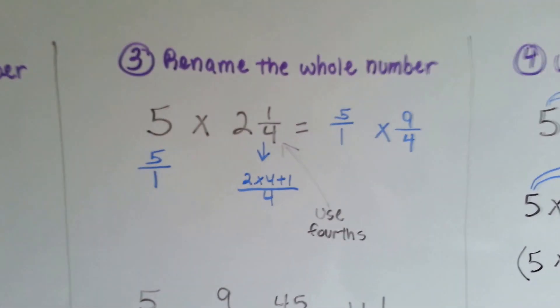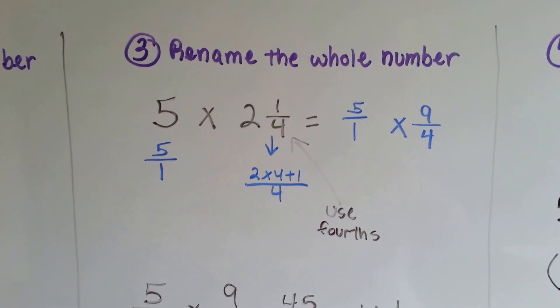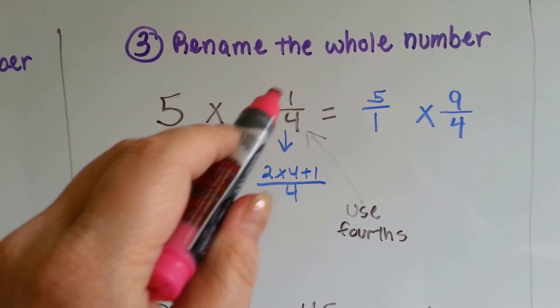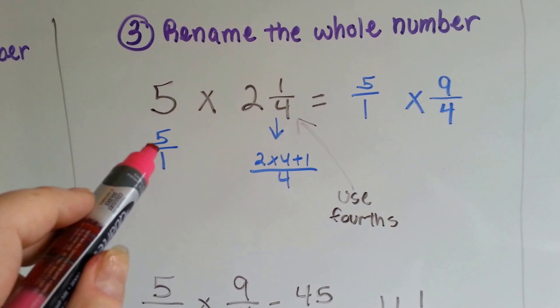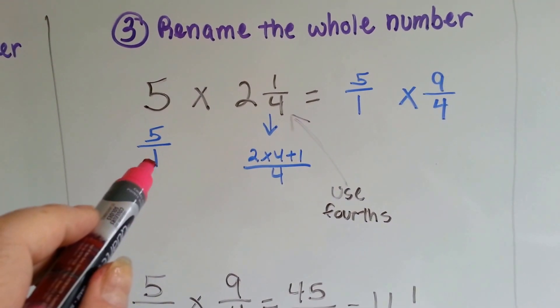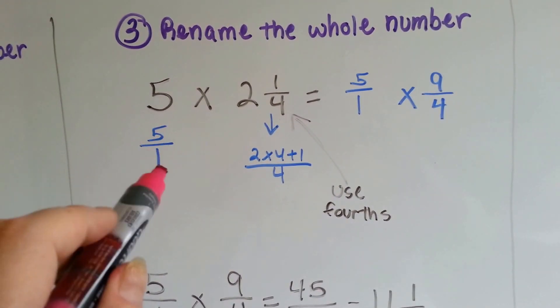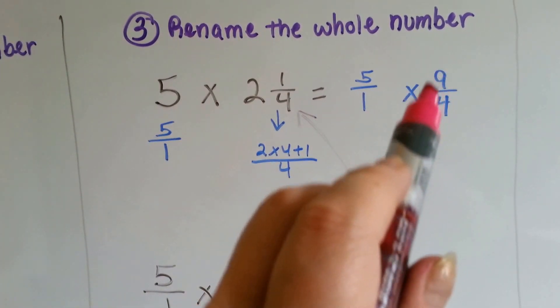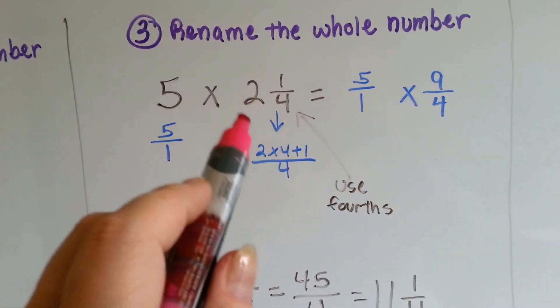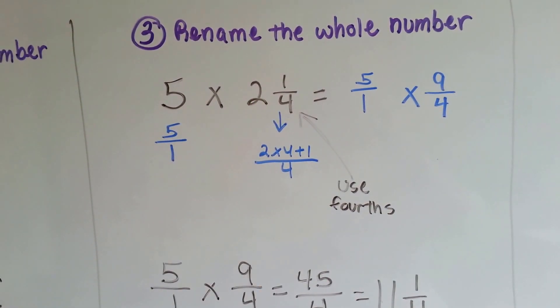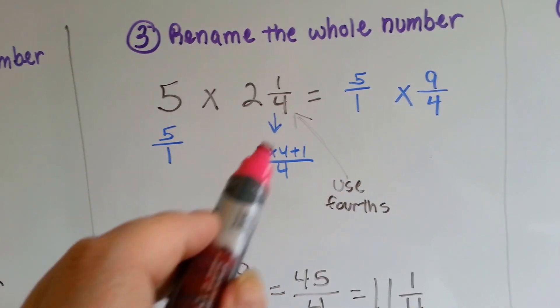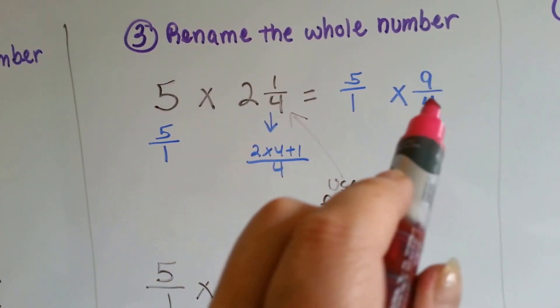Another way, the third way, is to rename a whole number. So if we've got 5 times 2 and 1 fourth, we can say 5 over 1 and make this an improper fraction and multiply it by 9 over 4. Because we'll turn this into an improper fraction, 2 times 4 plus 1, that's 8 plus 1 is 9 over 4.